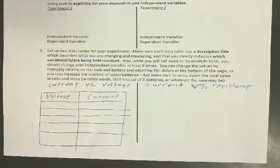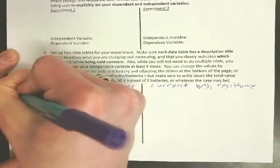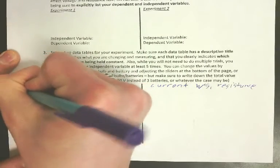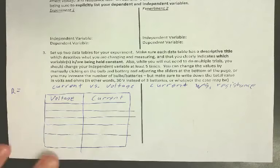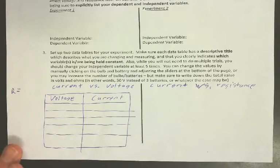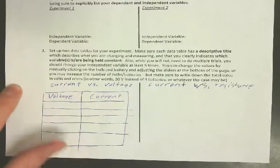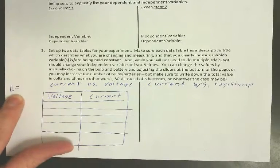The other thing you need to do is write down what your resistance is going to be. When you're changing the voltage, you need to keep the resistance constant and write down what value you're using.